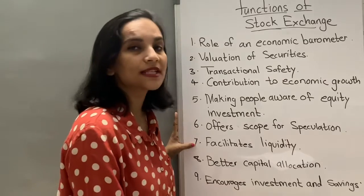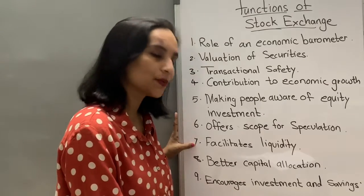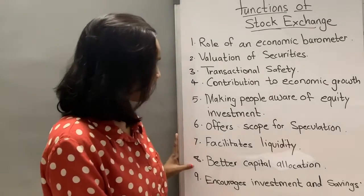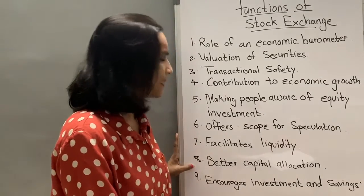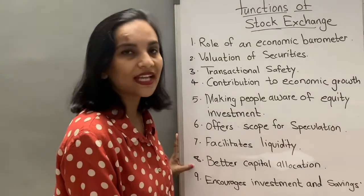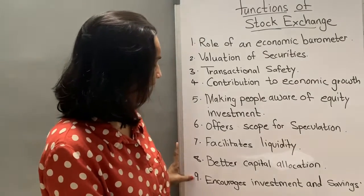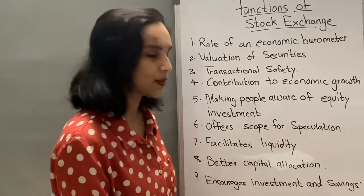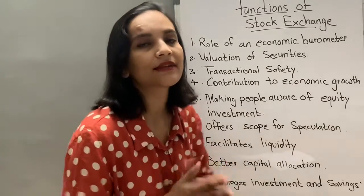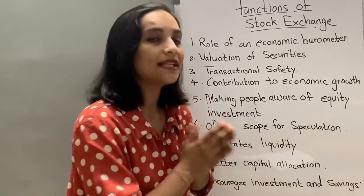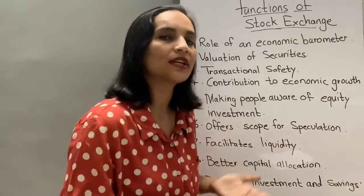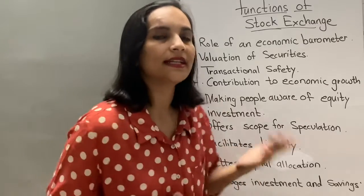Number seven: facilitates liquidity. Number eight: better capital allocation. Number nine: encourages investment and saving. So let's understand these points in a little detail.